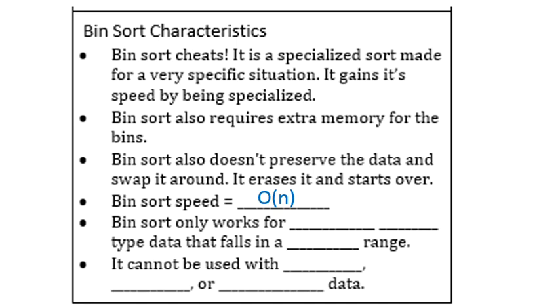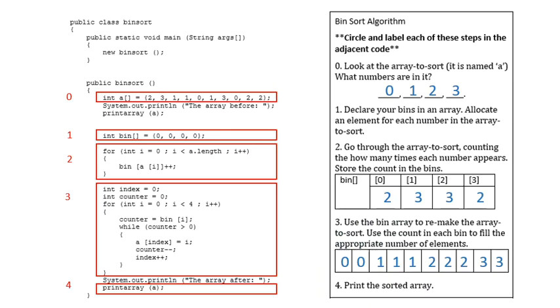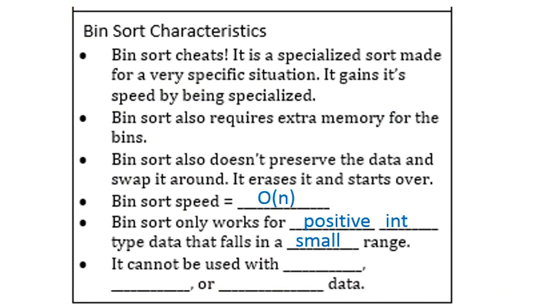Bin sort speed is order N, which is so much faster than all the N squared ones we know. It only works, however, for positive integer type data that falls in a small range. That's its limitation. And the line has to do with the counting. It cannot run. I'll show you the line that restricts us. It's this line right here, the one where you have the array used in the bin line. That can only be done with integers. So that's our limitation. That means that we can't use it with doubles or chars or strings or anything else. Only integers.